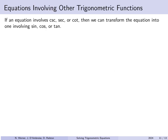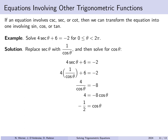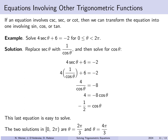If an equation involves other trig functions like cosecant, secant, or cotangent, generally convert them to sine, cosine, or tangent, since we have well-established inverse functions for those. For example, let's solve 4 sec θ + 6 = −2 for θ in [0, 2π]. Replacing sec θ with 1/cos θ and subtracting 6 gives 4/cos θ = −8. Cross-multiplying: 4 = −8 cos θ, so cos θ = −1/2. We then ask: for which angles in [0, 2π] is cos θ = −1/2? The answer is θ = 2π/3 and 4π/3.